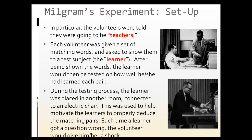Milgram would read out a series of words, and the learner would have to recall the correct word pair. If the person got an answer correct, the teacher's role was essentially just to say okay and do nothing. However, if the learner got an answer incorrect, the teacher had to administer an electric shock. The shocks started at 15 volts — almost nothing, maybe a tickle — and went up on a machine all the way to 450 volts, which was labeled as 'danger, XXX' on the machine, clearly indicating it would be painful and damaging. You would go up each time an answer was wrong.